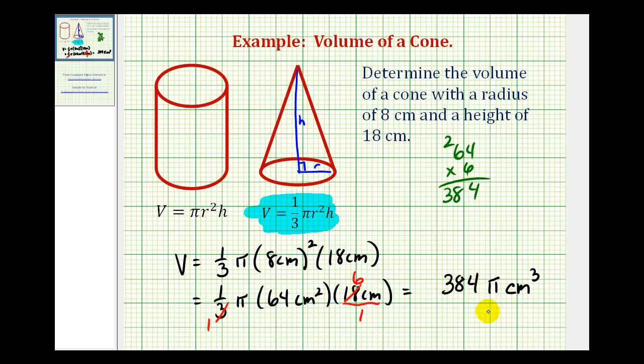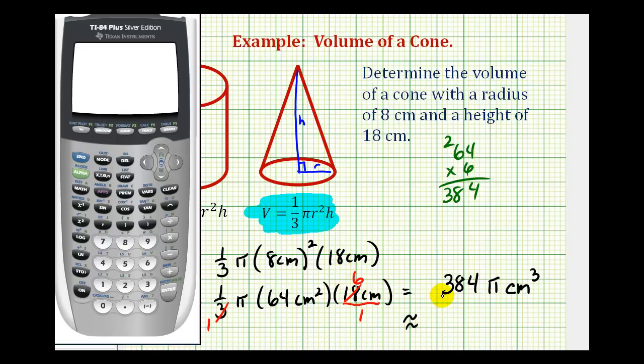Now let's go ahead and go to the calculator and get a decimal approximation for this, as well as verify that we did evaluate this correctly. So we'll first go ahead and type in 384 pi.